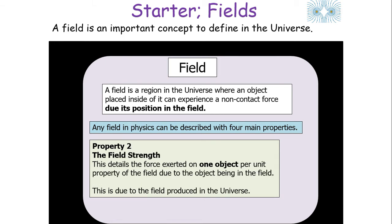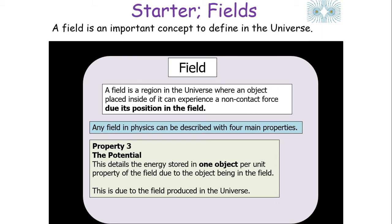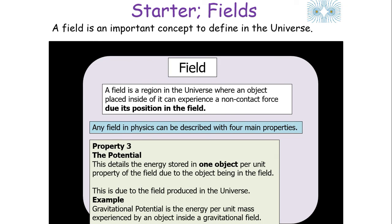Property 2 is the field strength, which details the force exerted on one object per unit property of the field due to the object being in the field. For example, the gravitational field strength is the force per unit mass experienced by an object inside a gravitational field. The third property is the potential, which details the energy stored in one object per unit property of the field. Gravitational potential is the energy per unit mass experienced by an object inside a gravitational field.